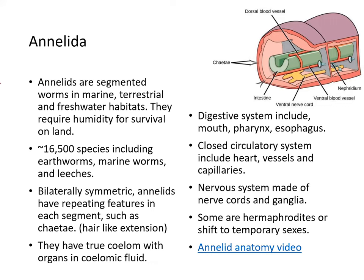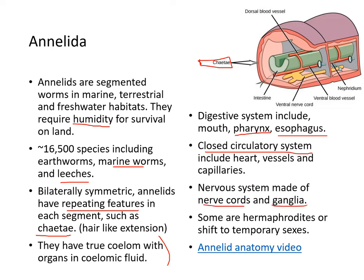Annelids are segmented worms found in marine, terrestrial, and freshwater habitats, and they require humidity for survival. There are about 16,500 species, including earthworms, marine worms, and leeches. They are bilaterally symmetric with repeating features in each segment, like chaetae — hair-like extensions. They have a true coelom with fluid inside. Their digestive system includes mouth, pharynx, and esophagus. They have a closed circulatory system including heart, vessels, and capillaries. Their nervous system is made up of nerve cords and ganglia. Some are hermaphrodites or can shift into temporary sexes.